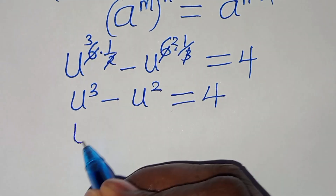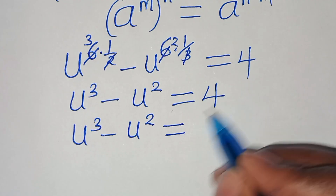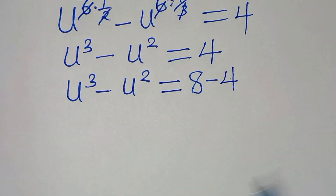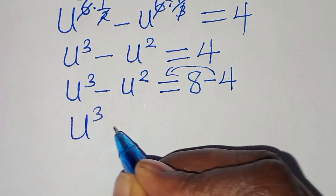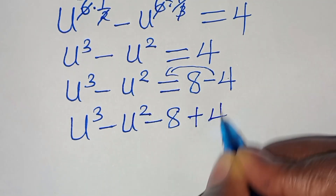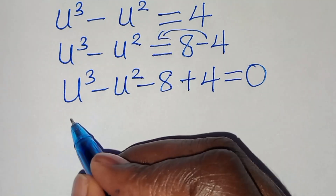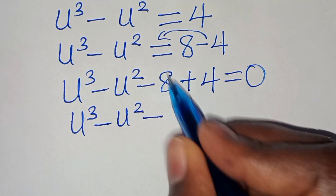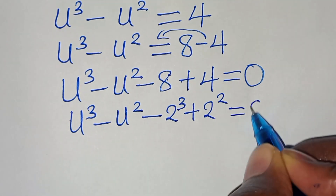Now, we have u to the power of 3 minus u to the power of 2, this is equal to 4. We can express 4 as 8 minus 4. Let's take 8 minus 4 to the left-hand side so that we have u to the power of 3 minus u to the power of 2, subtract 8, then plus 4, this is equal to 0. We can express 8 as 2 to the power of 3, and 4 as 2 to the power of 2, this is equal to 0.